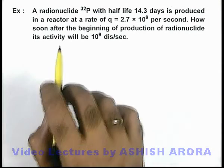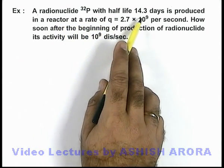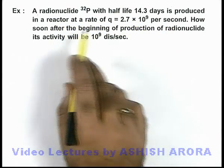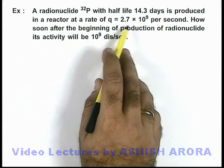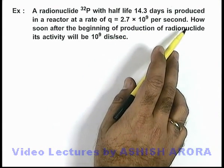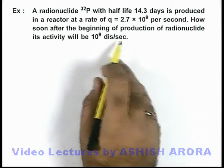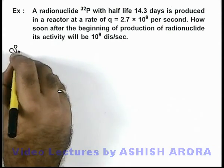In this example, we are given that a radionuclide phosphorus-32 with half-life 14.3 days is produced in a reactor at a rate of 2.7 × 10^9 per second. We are required to find how soon after the beginning of production of radionuclide its activity will be 10^9 disintegrations per second.